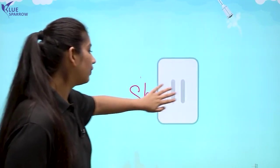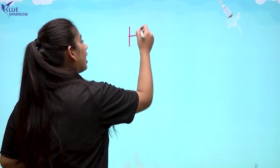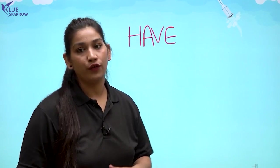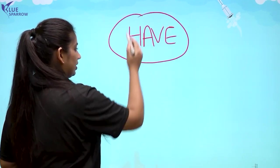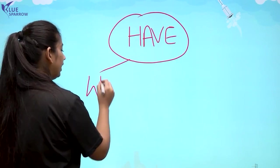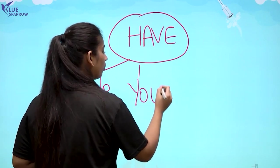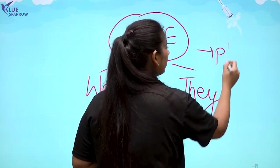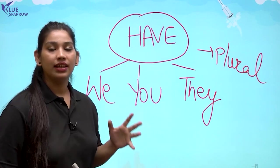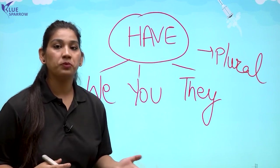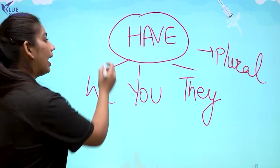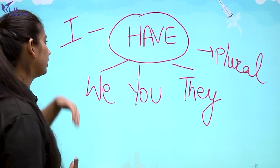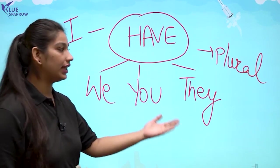Now let us understand when we use have. We use have with plural. Jab bhi koi object plural form mein hota hai, more than one hota hai, tab hum have ka use karte hai. We also use have with we, you, they, and with plural form. I ke saath bhi hum have ka hi use karte hai. So have is used with I, we, you, they, and plural.